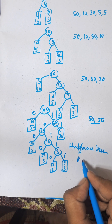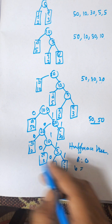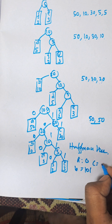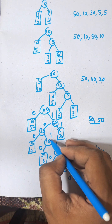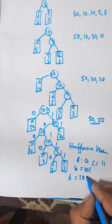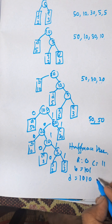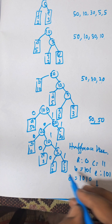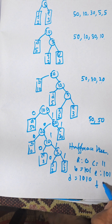The resulting Huffman codes are: A = 0, B = 100, C = 11, D = 1010, E = 1011, and F = 1010. These binary codes are derived by following the 0 and 1 branch labels from the root to each leaf node in the Huffman tree.